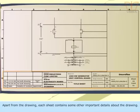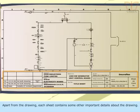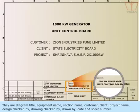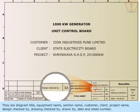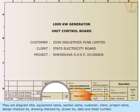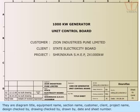Apart from the drawing, each sheet contains some other important details about the drawing. They are diagram title, equipment name, section name, customer, client, project name, design checked by, drawing checked by, drawn by, date and sheet number.